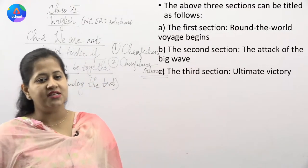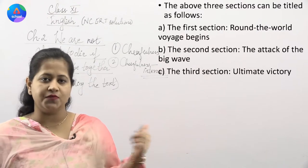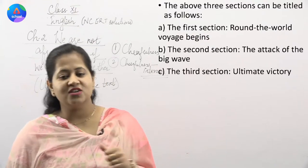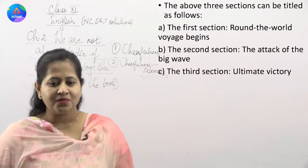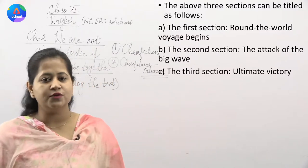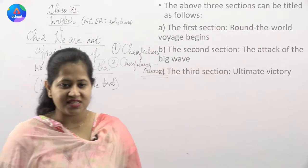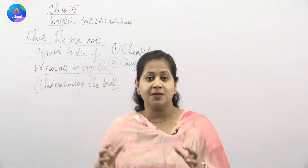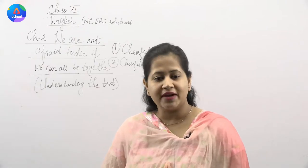The three sections can be titled as follows: the first section is 'Round the World Voyage Begins' — a round-the-world voyage like Captain James Cook; the second section is 'The Attack of the Big Wave'; and the third section is 'Ultimate Victory.' These are the three subtitles for the three different situations. I hope these NCERT solutions are clear and the proper subtitles given here will be helpful especially in your exams when you write the answers.